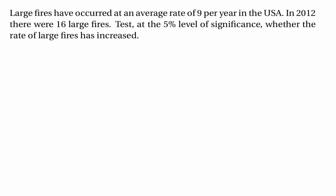The number of large fires is a number of events in a fixed interval of time, so it makes sense to assume that the test statistic has the Poisson distribution. The number of fires should have the Poisson distribution with parameter lambda. We set our null hypothesis as lambda equals nine, because that's our default assumption about the number of large fires per year — lambda would be nine if there's been no change from the historical average. The alternative hypothesis is that lambda is greater than nine, because we want to know whether the rate has increased.